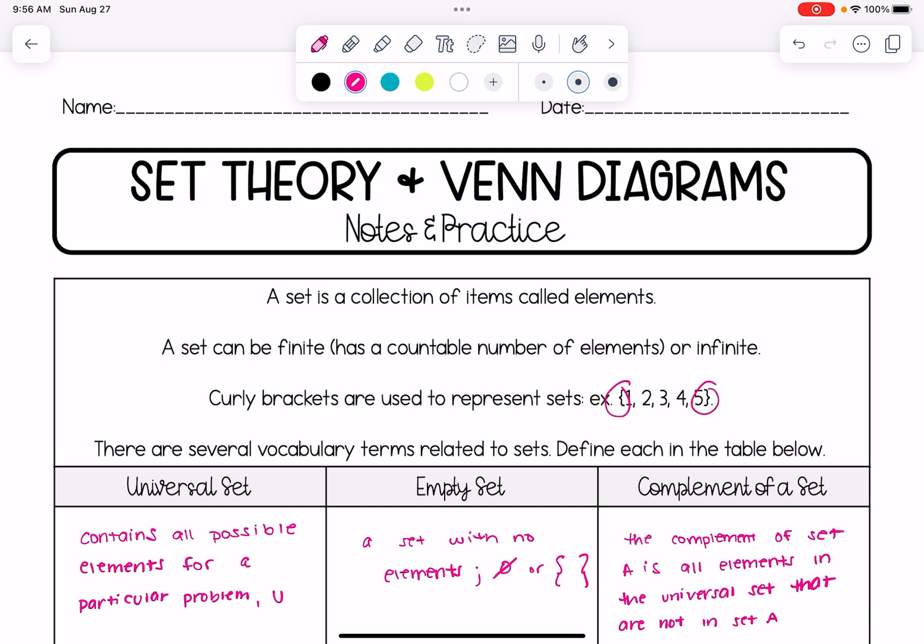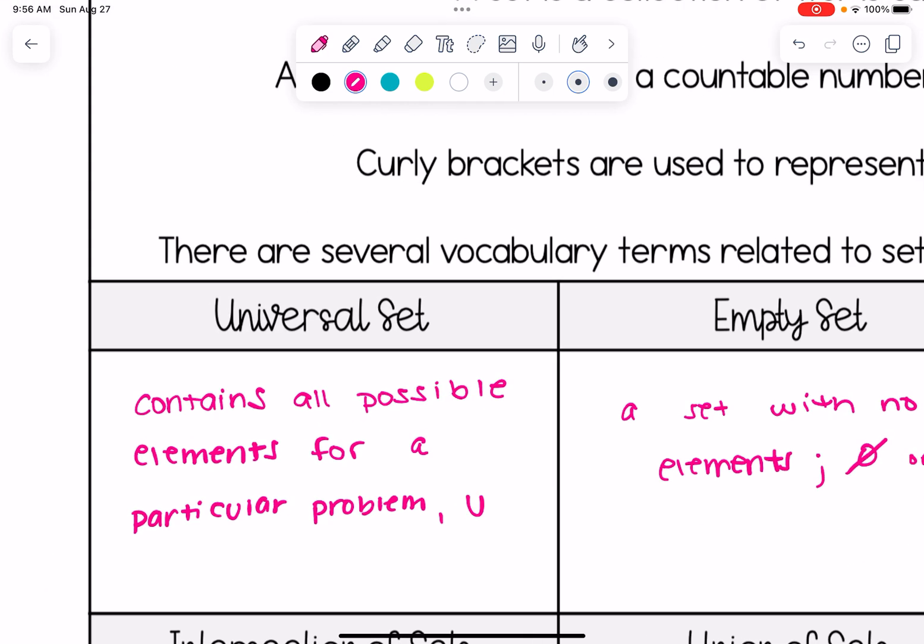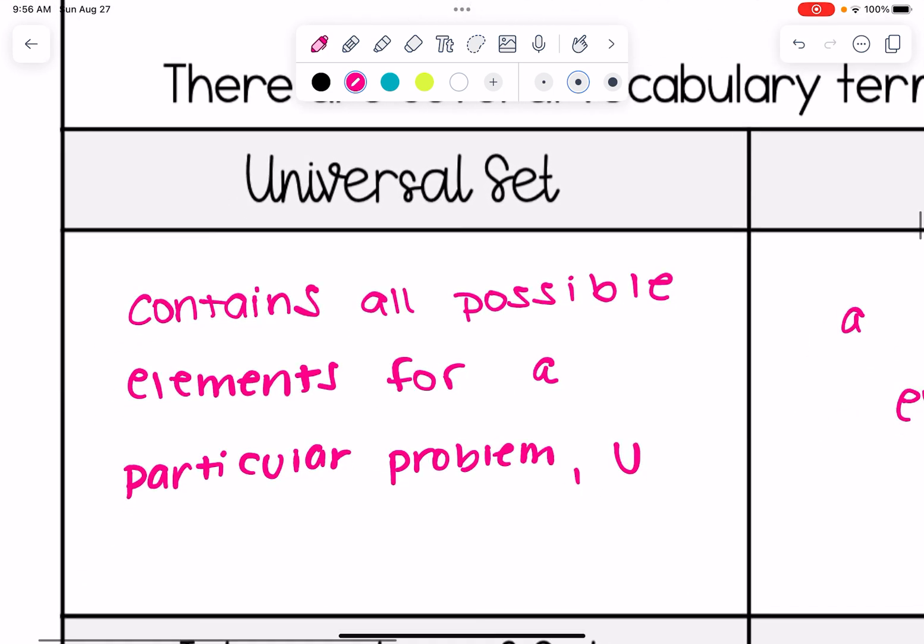And there are a bunch of vocabulary terms related to sets and I have filled in the definitions for each, so let's just walk through them and then we'll look at some sample problems. All right first up the universal set. Think of that as like the biggest set. It contains all possible elements for a particular problem and it's noted by the letter U, U standing for universal.